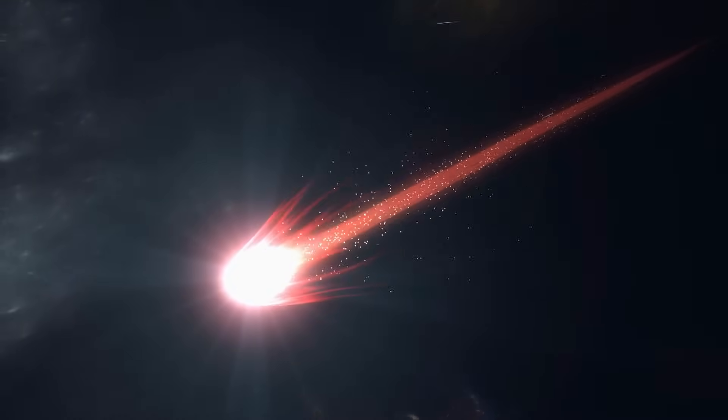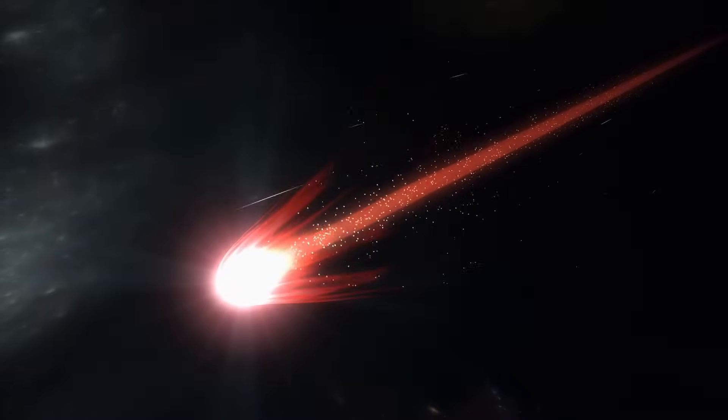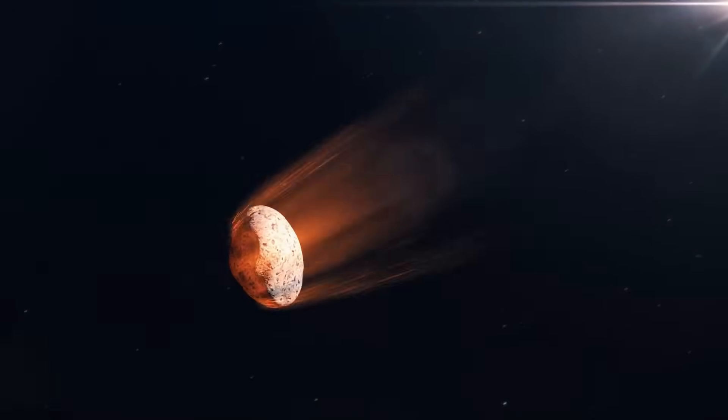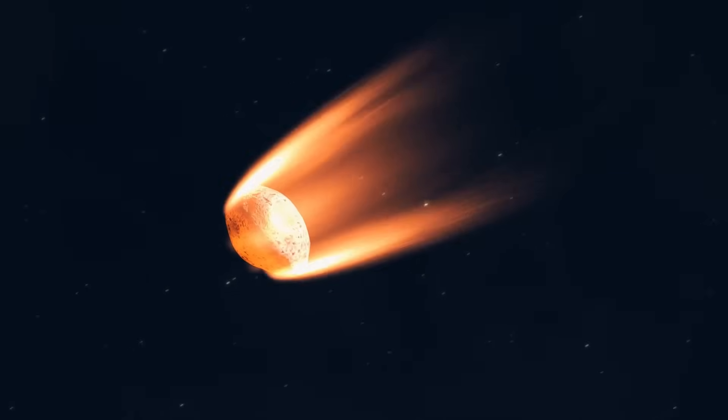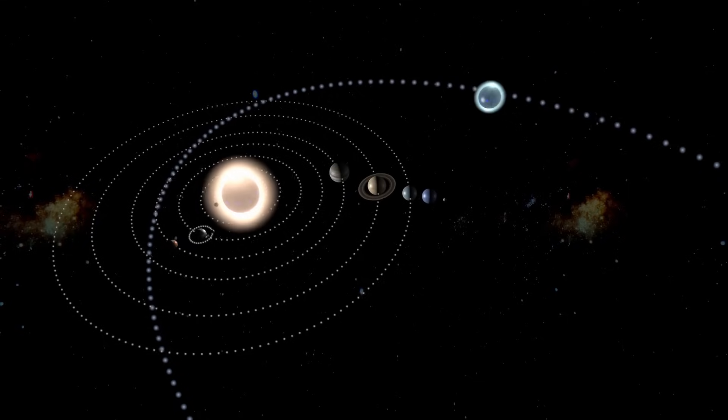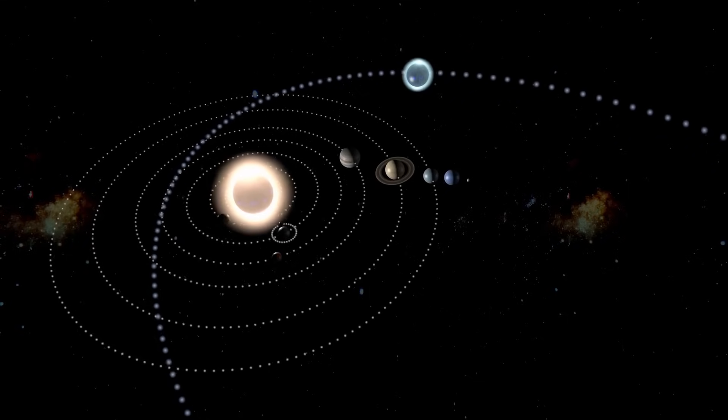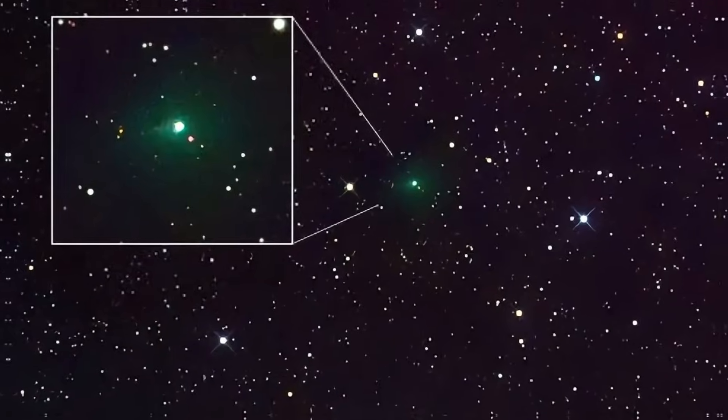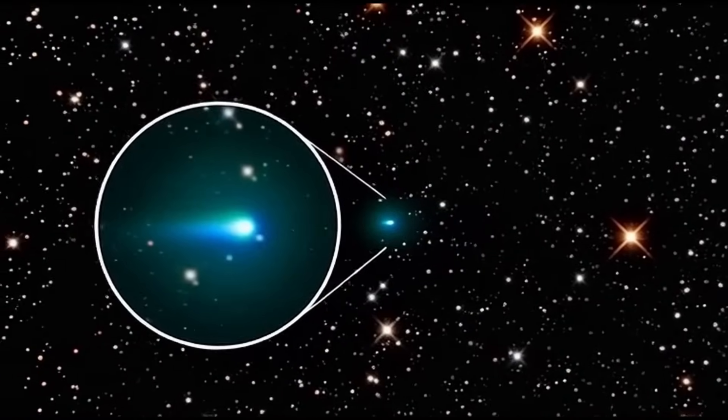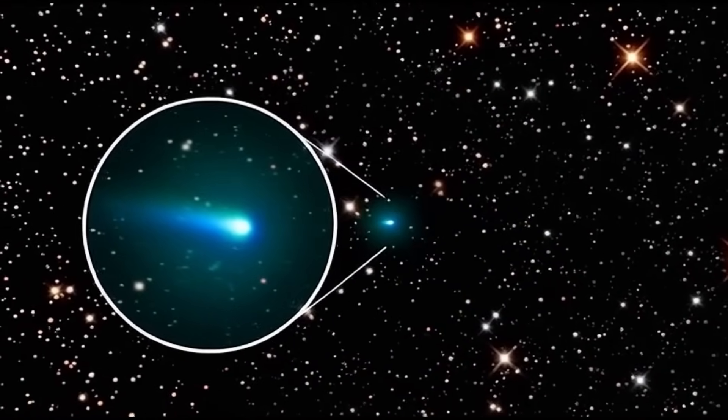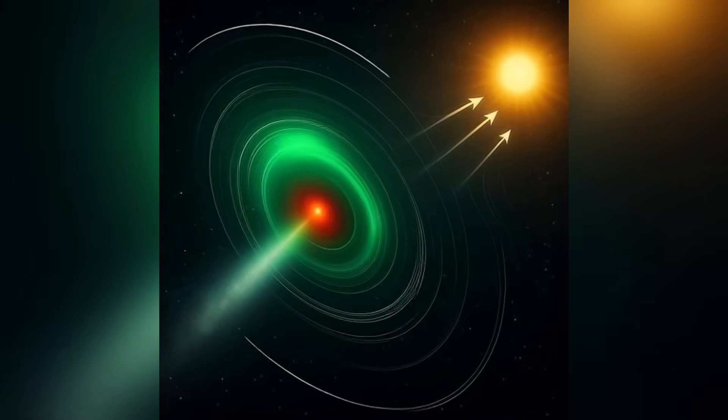At first glance, it would be easy to dismiss 3i Atlas as just another comet, one more icy vagabond falling in toward the sun. NASA officially adopted that label, since comets are known for bright appearances and long looping trajectories. But to others, including Harvard astrophysicist Avi Loeb, the designation feels too convenient.